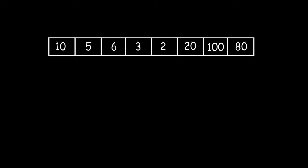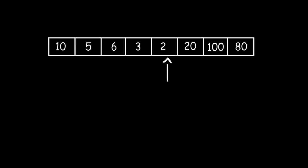For example, given an array [10, 5, 6, 3, 2, 20, 100, 80], we check all even-positioned elements. At index 0, element 10 is greater than adjacent 5. At index 2, element 6 is greater than adjacent 5 and 3. At index 4, element 2 is less than its adjacent, so we swap with the previous element. Again at index 4, 3 is less than the next element, so we swap. At index 6, element 100 is greater than its adjacent — the array is sorted in waveform.